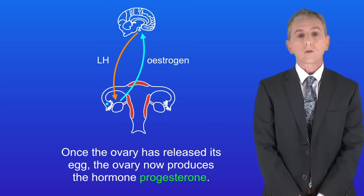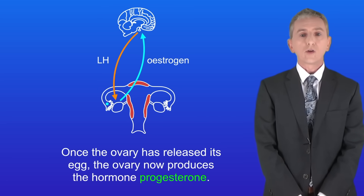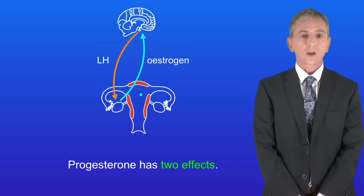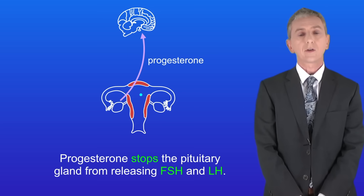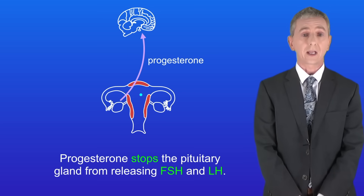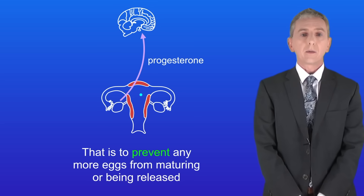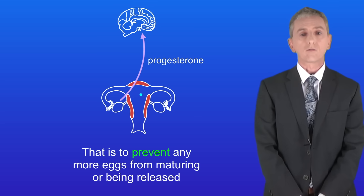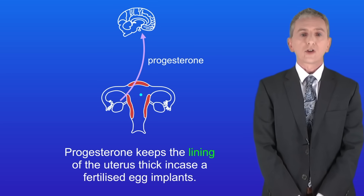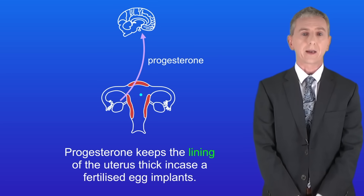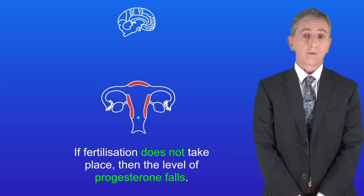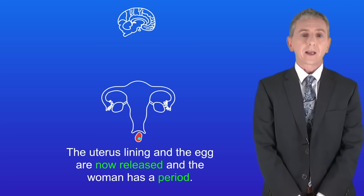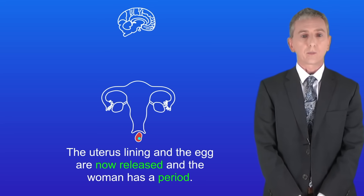Once the ovary has released its egg, the ovary now produces the hormone progesterone. Progesterone has two effects. Firstly, progesterone stops the pituitary gland from releasing FSH and LH — that's to prevent any more eggs from maturing or being released. Secondly, progesterone keeps the lining of the uterus thick in case a fertilized egg implants. If fertilization does not take place then the level of progesterone falls, the uterus lining and the egg are released, and the woman has a period.